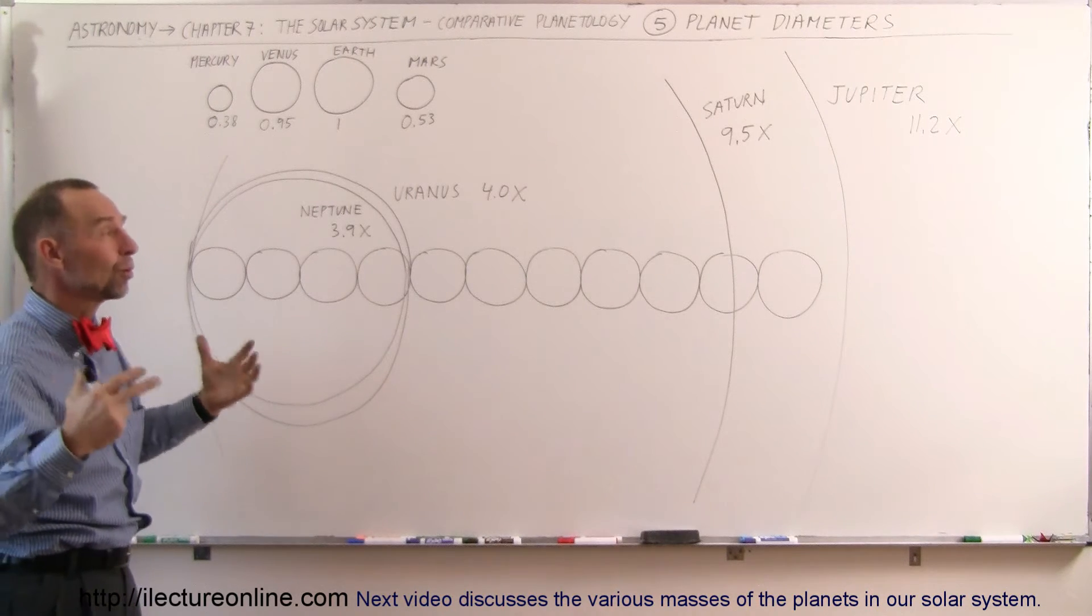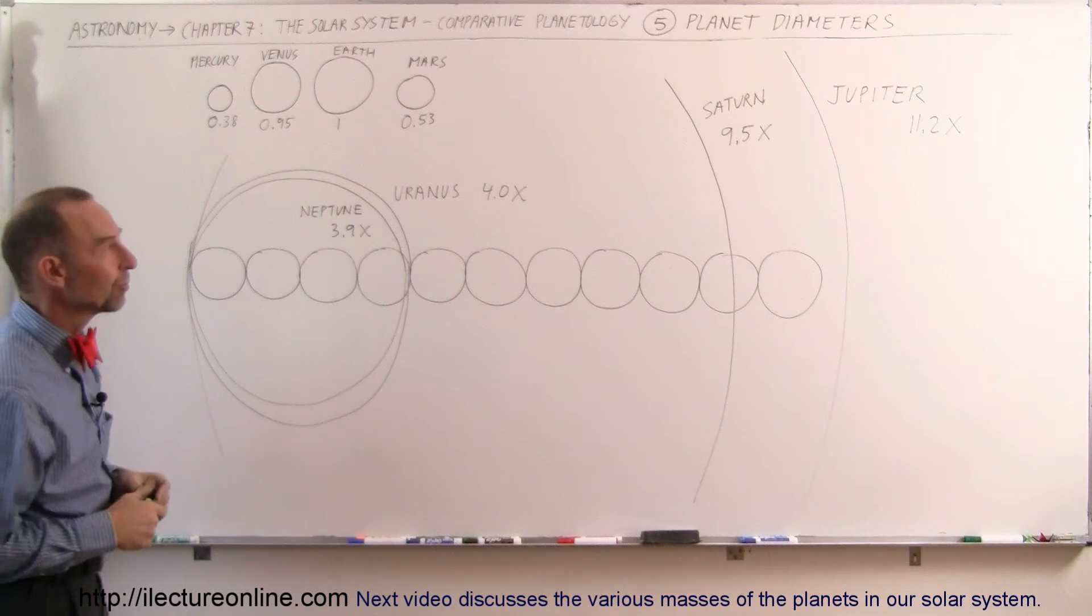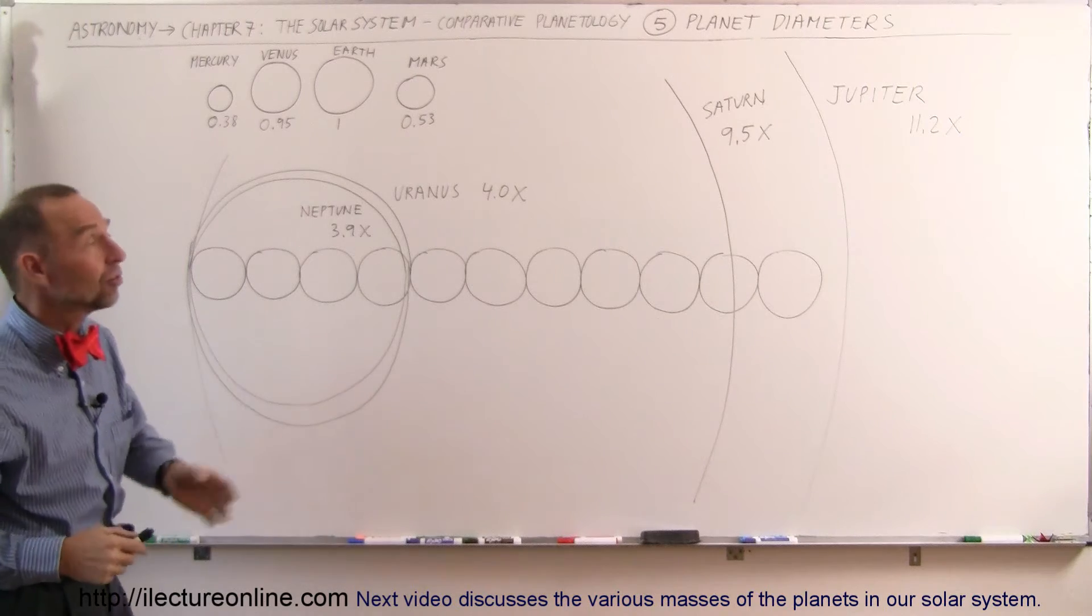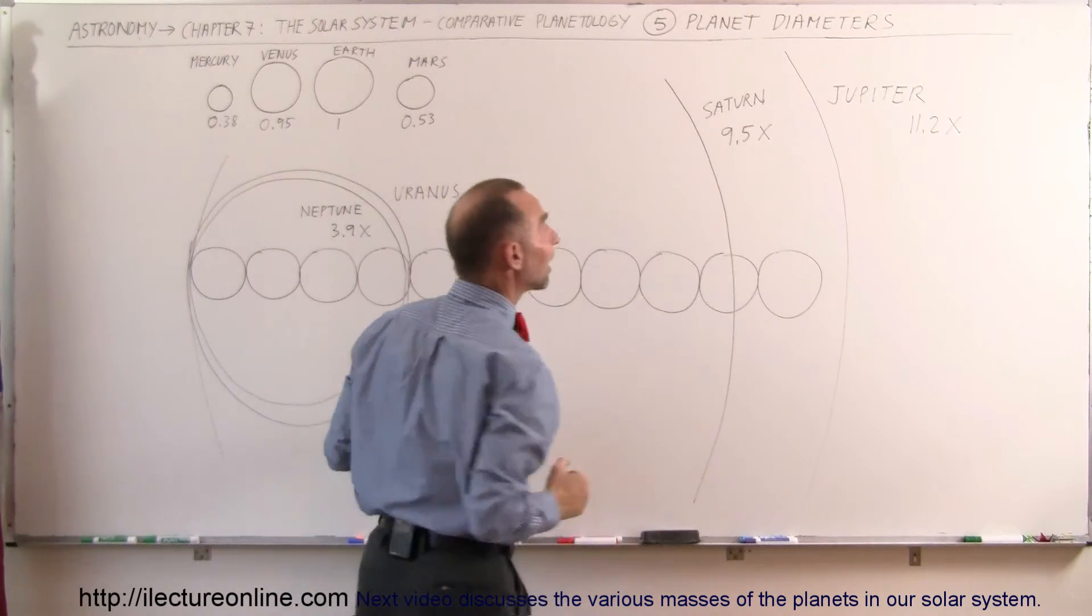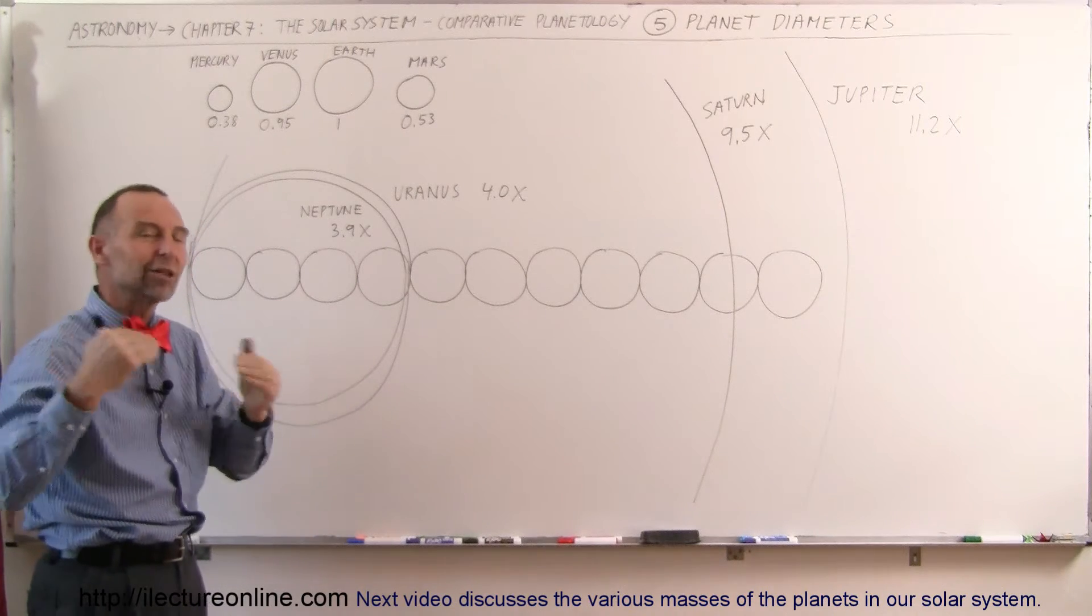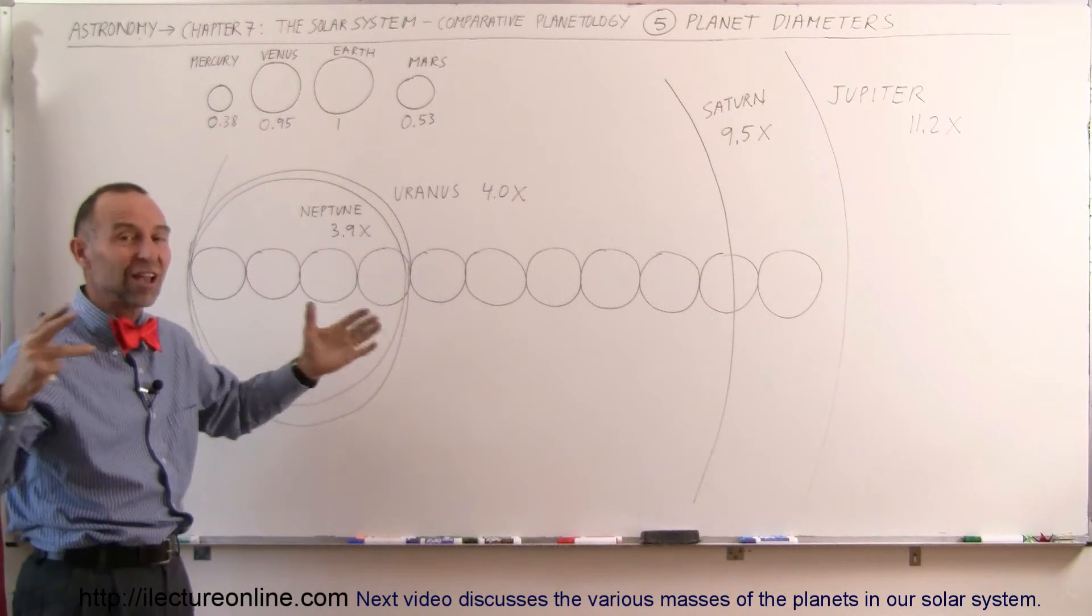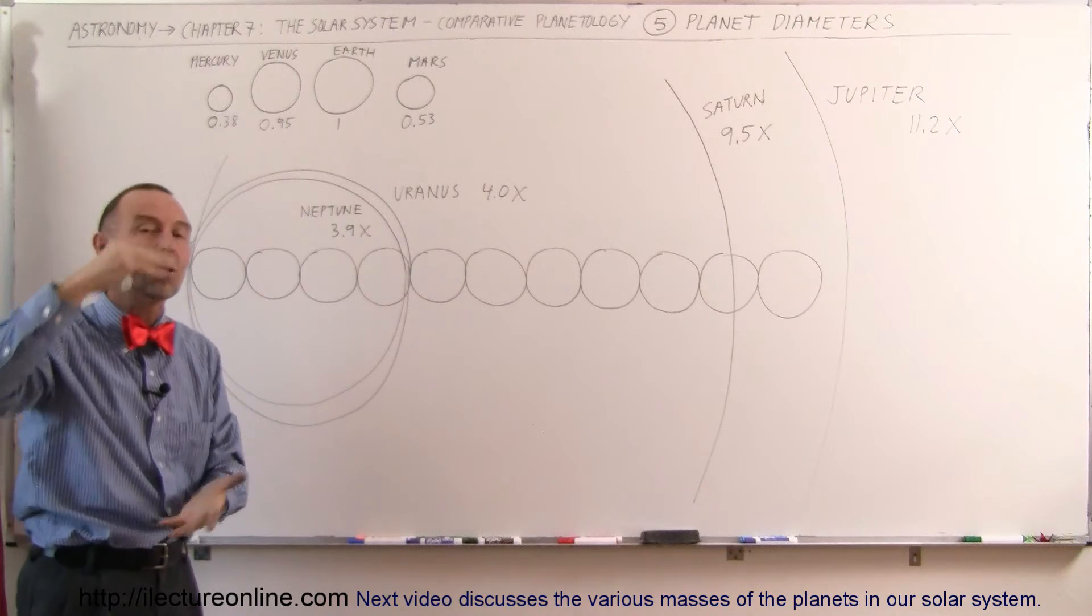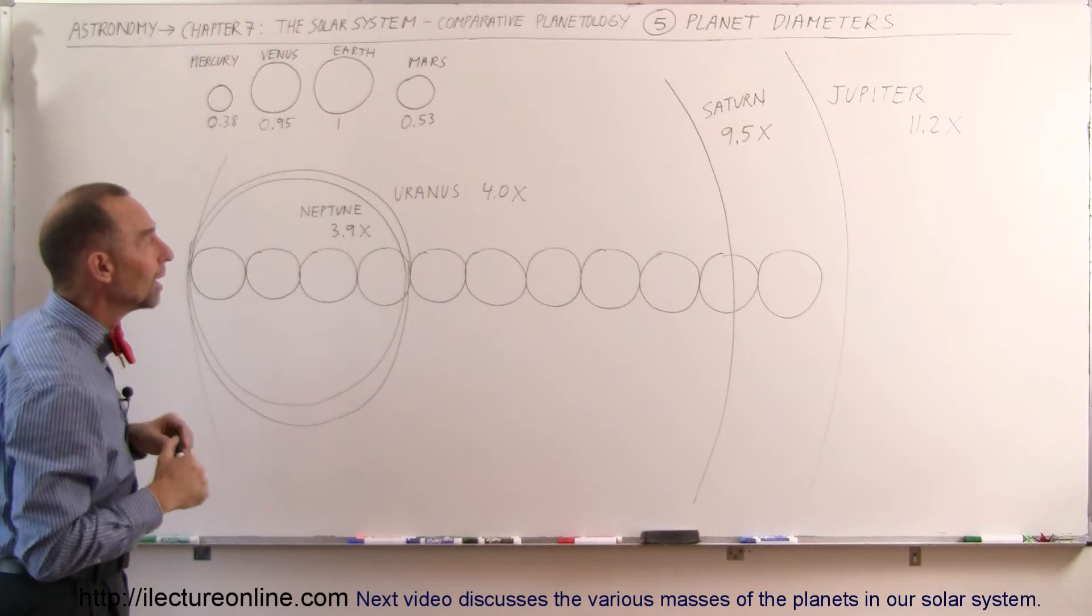Volume-wise, Jupiter is more than 1,000 times the volume of the Earth. Saturn is a close second. Saturn has a diameter about 9.5 times the diameter of the Earth. Now, that of course depends upon which way you look at Saturn, because Saturn is actually wider than it is tall by quite a bit. We'll talk about that a little bit more and why.